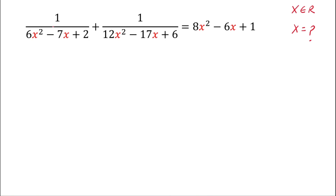Hello students. In this video we are going to solve 1 over (6x² - 7x + 2) plus 1 over (12x² - 17x + 6), which equals 8x² - 6x + 1. Here we will find out the value of x, where x belongs to the real numbers.